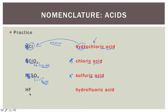Last but not least, we have HF — one of the deadliest acids that exists. We're not interested in the H, leaving just the fluorine behind. It is monoatomic, made of just one atom, so we add the prefix hydro-. Fluorine becomes fluoric, and then we tag the word 'acid' onto the end to get hydrofluoric acid.